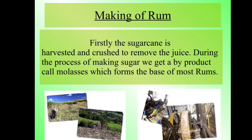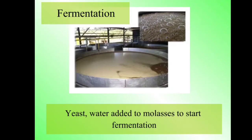First, we are going to learn the making of rum. Firstly, the sugarcane is harvested and crushed to remove the juice. During the process of making sugar, we get a by-product called molasses, which forms the base of most rums. The first step is fermentation — yeast and water are added to molasses to start fermentation.